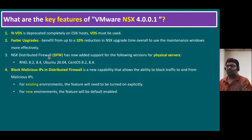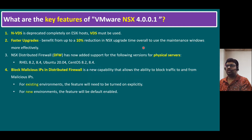NSX Distributed Firewall now adds support for physical servers including RHEL 8 series, Ubuntu 20 series, and CentOS. With these bare metal platforms, the NSX Distributed Firewall also adds support. A new capability called 'block malicious IPs in Distributed Firewall' allows the ability to block traffic to and from malicious IPs. For existing NSX environments, this feature will not be turned on automatically — it must be enabled manually. For fresh NSX 4.0.1 deployments, it is enabled by default.